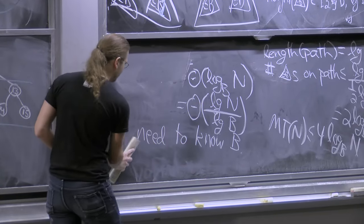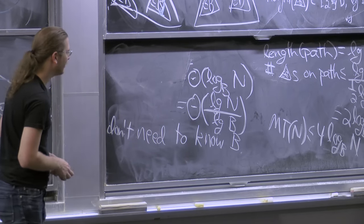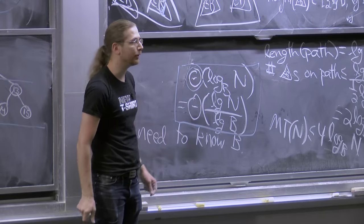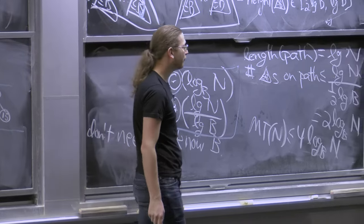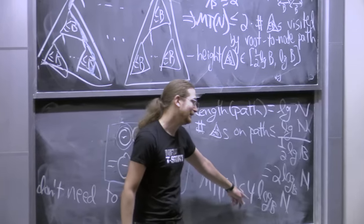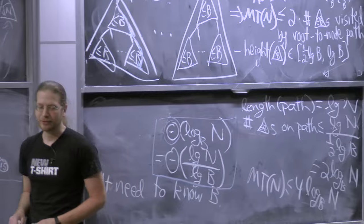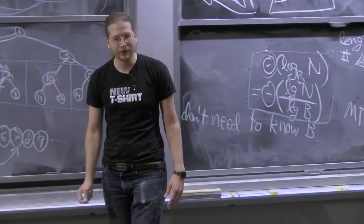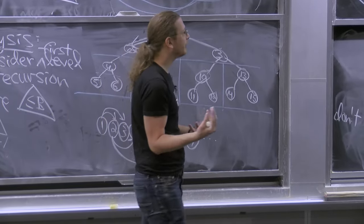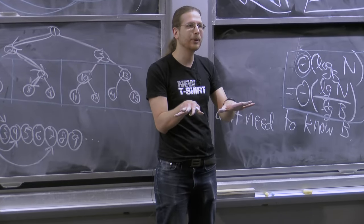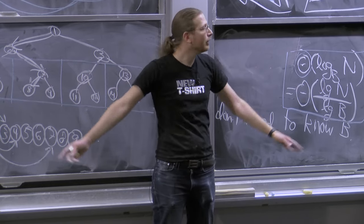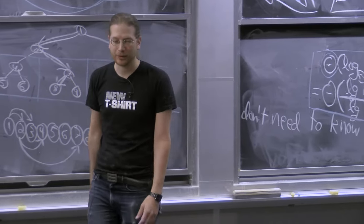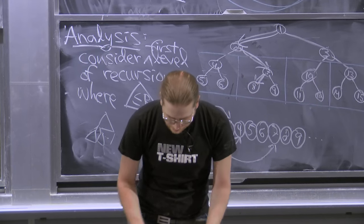So we achieve optimal log_B(N) memory transfers for search without knowing B. B-trees get essentially 1 × log_B(N), while this cache oblivious binary search gives about 4 × log_B(N) — though a tighter analysis brings it to about 1.4 ×. You can't do quite as well cache-obliviously as cache-aware, but you're close. The real win is that cache oblivious algorithms are optimal at all levels of the memory hierarchy simultaneously, while a B-tree tuned for one specific B does poorly at other levels.